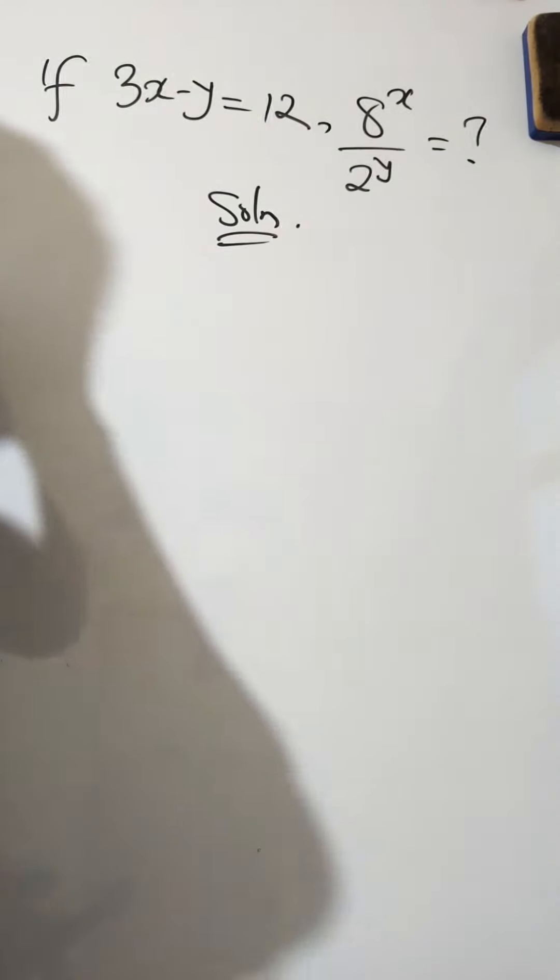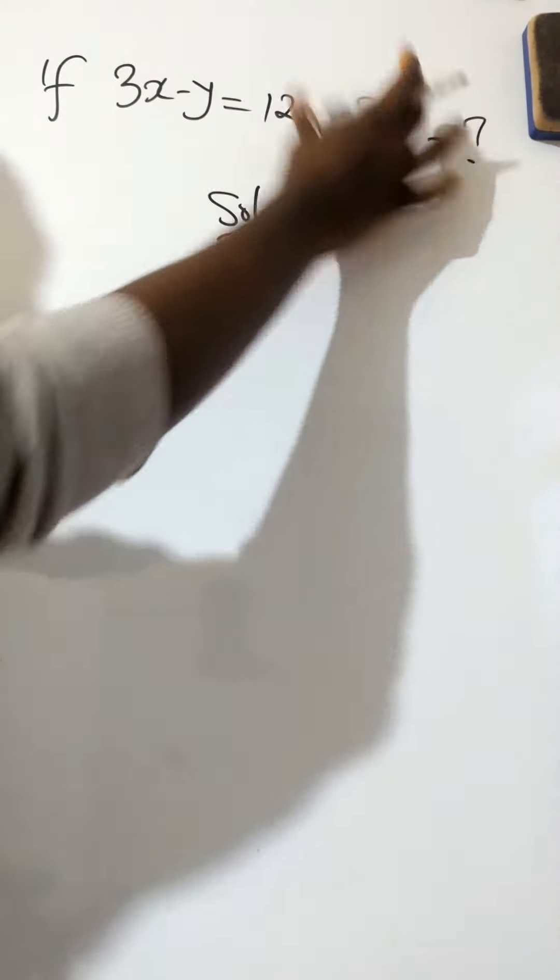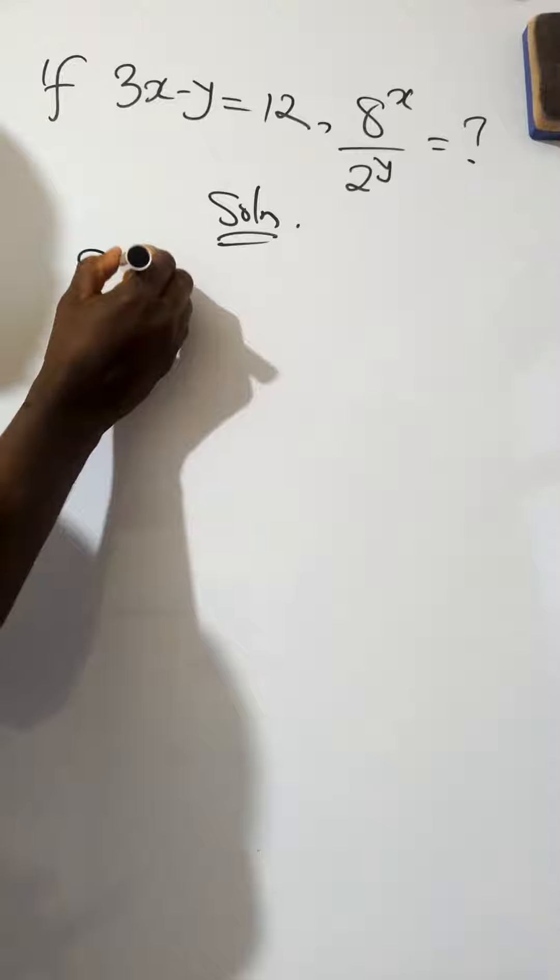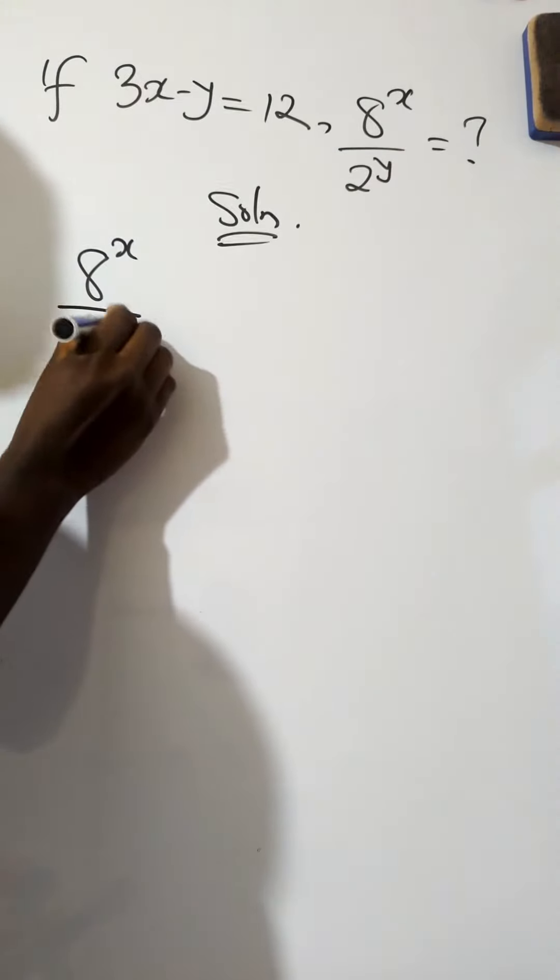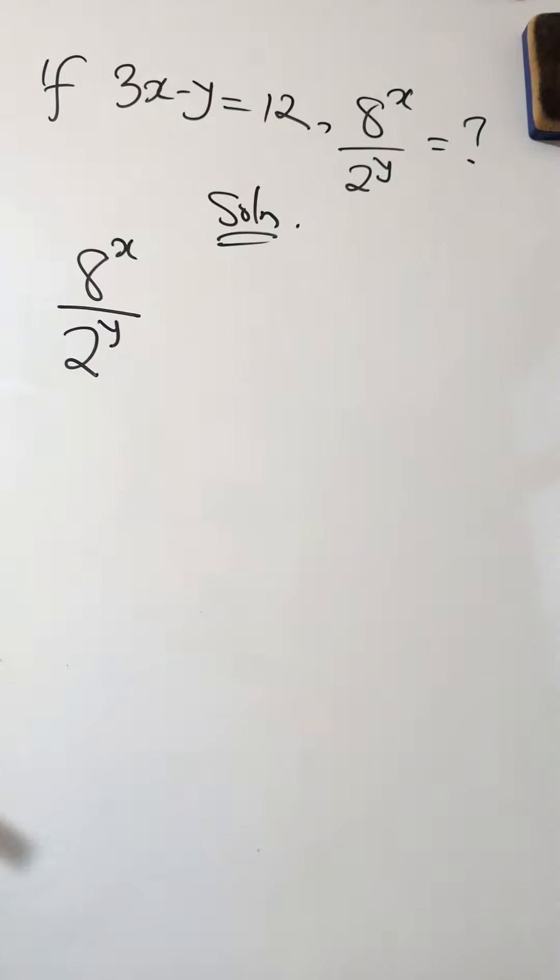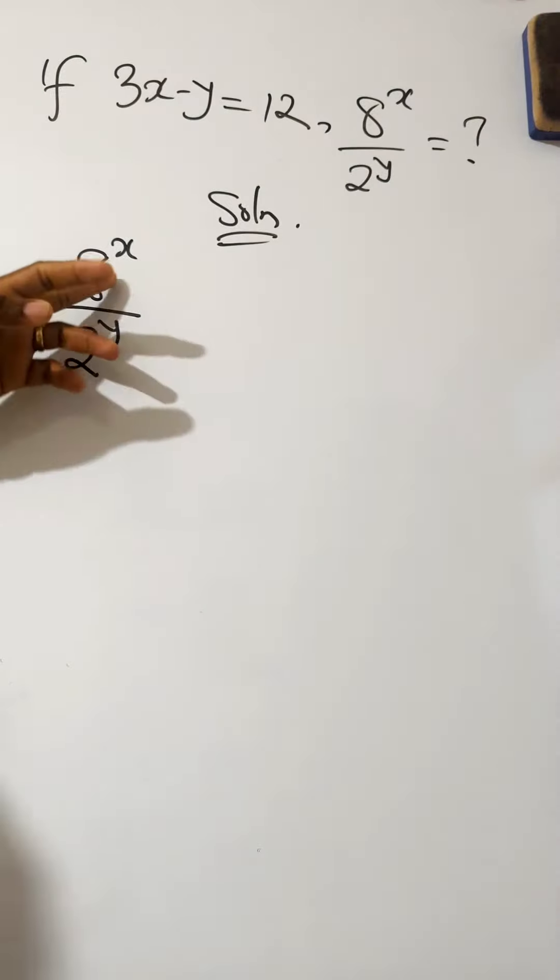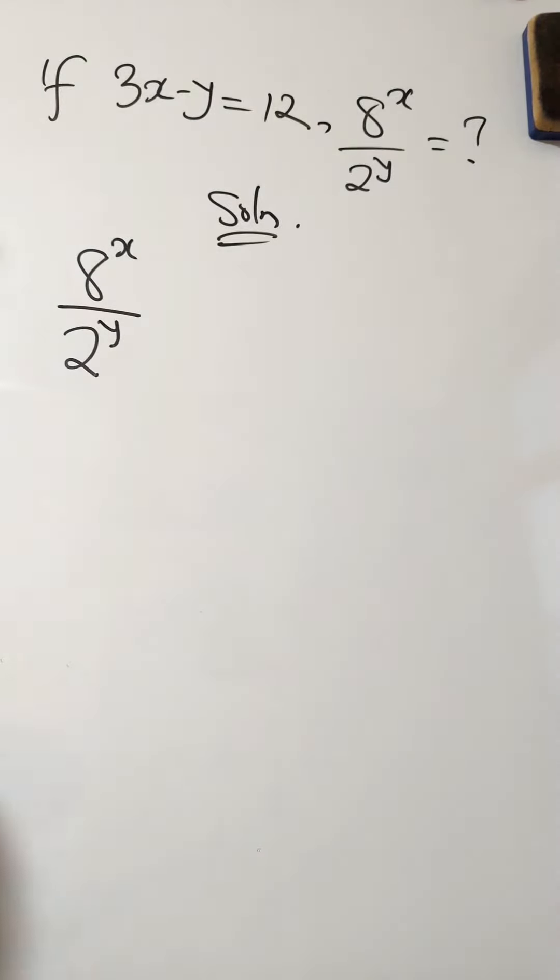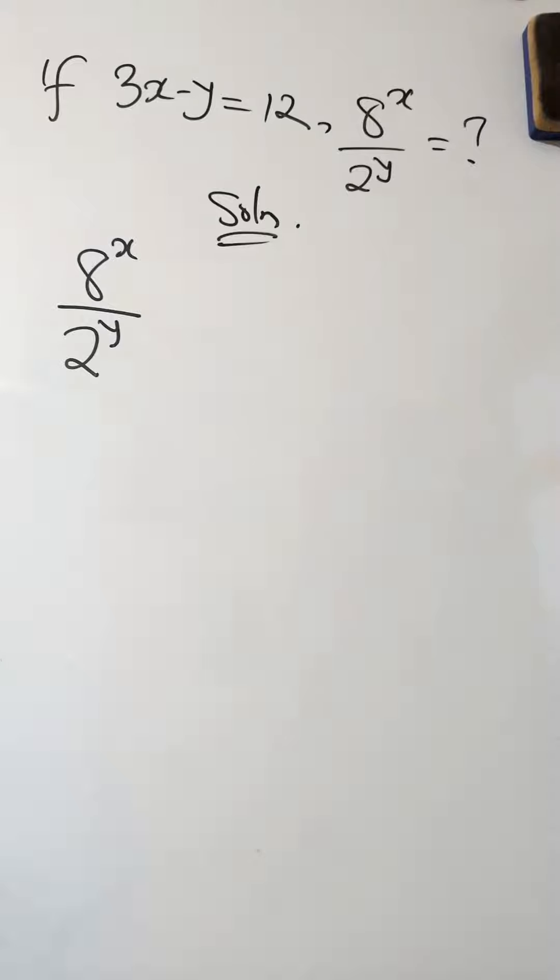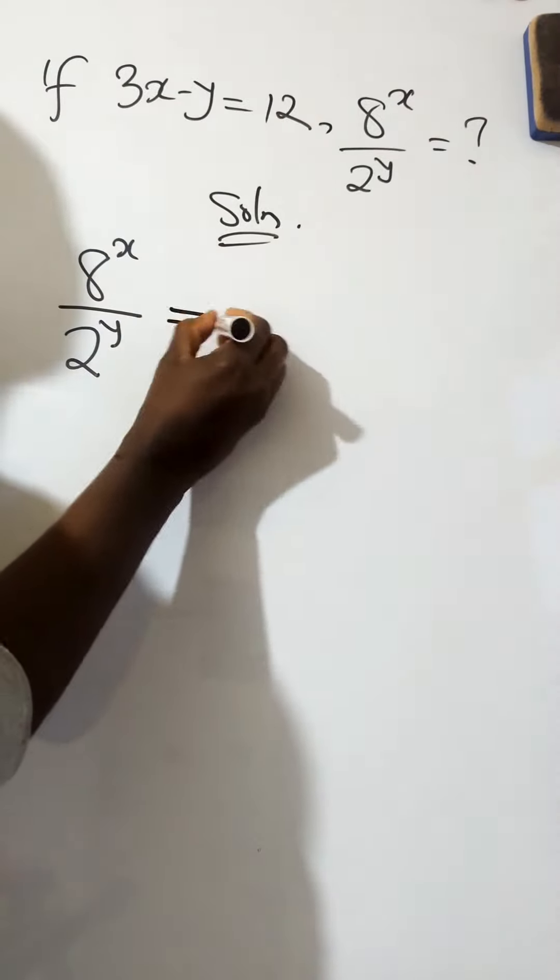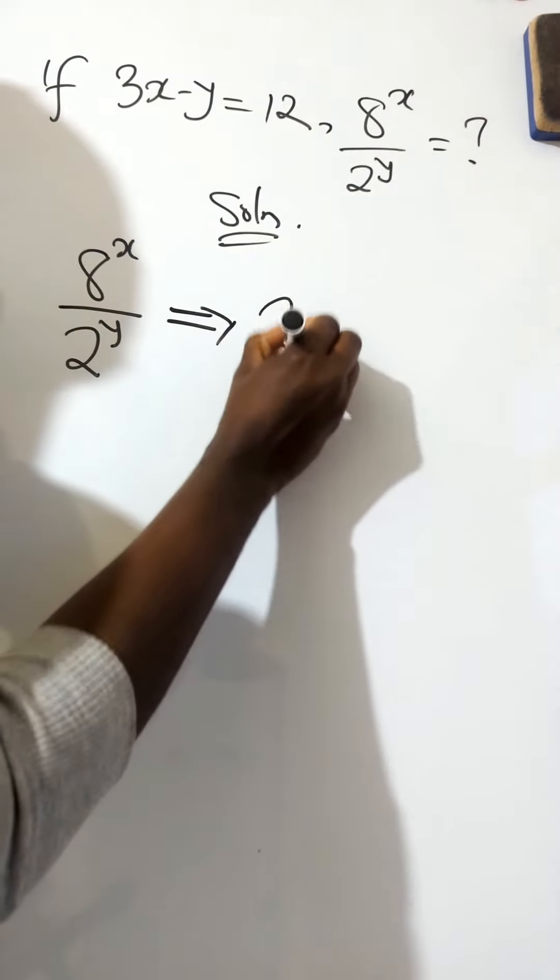It's just very simple. Now, we'll focus on this. We are looking for 8 raised to power x over 2 raised to power y. Now, if you look at 8, 8 is also a multiple of 2. It makes the job very easy because we also have 2 here and 8 is a multiple of 2. So, we can express 8 to be 2 raised to power 3.